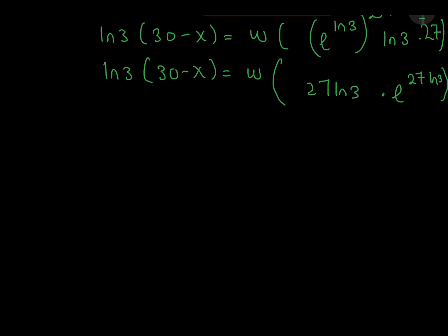If you remember Lambert W function that we used previously, it says that if we have a e to the power a, this equals to a. Because this is equal to this, according to Lambert W function we'll have 27 ln 3.